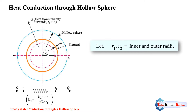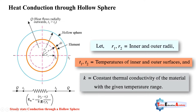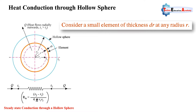Let r1 and r2 be the inner and outer radii of the hollow sphere. From the origin of the hollow sphere, r1 is the inner radius and r2 is the outer radius. Let T1 and T2 be the temperatures of the inner and outer surfaces of the hollow sphere respectively. K is the thermal conductivity, which we consider uniform or constant throughout the heat transfer.